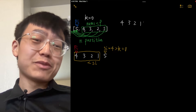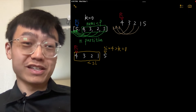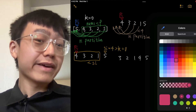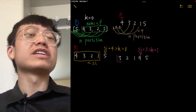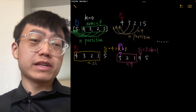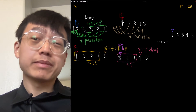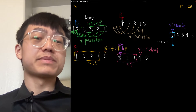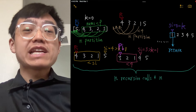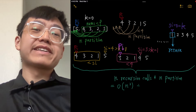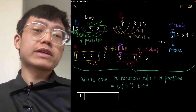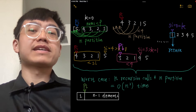In the worst-case scenario, such as always choosing the rightmost element, the algorithm divides the list by only one element at each step, resulting in O(N²) time complexity. When the pivot is chosen randomly, the probability of selecting a bad pivot repeatedly is very low, so the expected running time remains linear in the size of the input list.